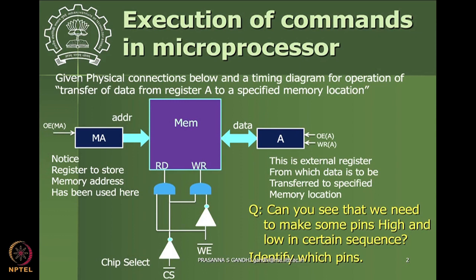Recall the sequence of operations for getting data from external register A transferred to some memory location, where that memory location is indicated by the address on the address bus. That address is stored in a register called MA. The sequence requires the output enable for MA to go high, which puts the address on the address bus, addressing that particular memory location.